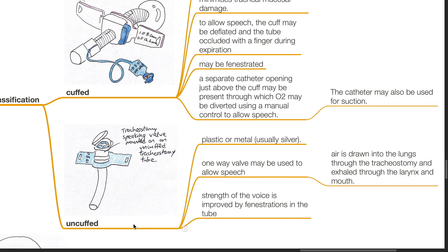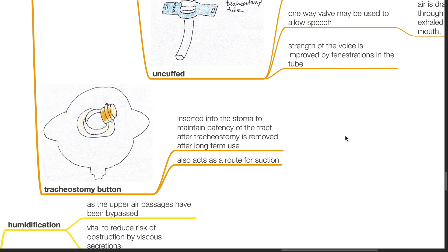Uncuffed tracheostomy tubes are either plastic or metal, usually silver. A one-way valve may be used to allow speech; air is drawn into the lungs through the tracheostomy and exhaled through the larynx and mouth. The strength of the voice is improved by fenestrations in the tube. A tracheostomy button is inserted into the stoma to maintain patency of the tract after the tracheostomy tube is removed following long-term use, and also acts as a route for suction.